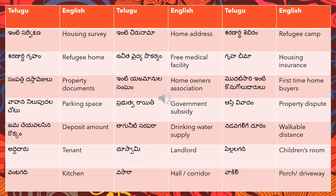'Adhidharu' means tenant — someone living on rent at a particular place. 'Booswami' means landlord. 'Pillalagadi' means children's room. 'Vantagadi' means kitchen. 'Vasara' means hall, corridor, or alley.